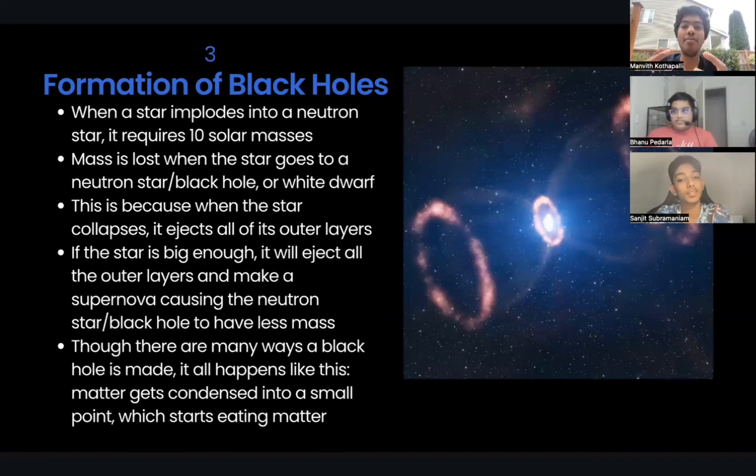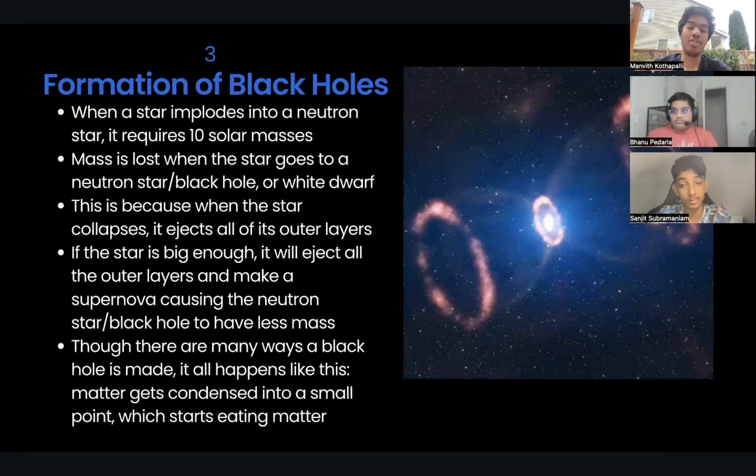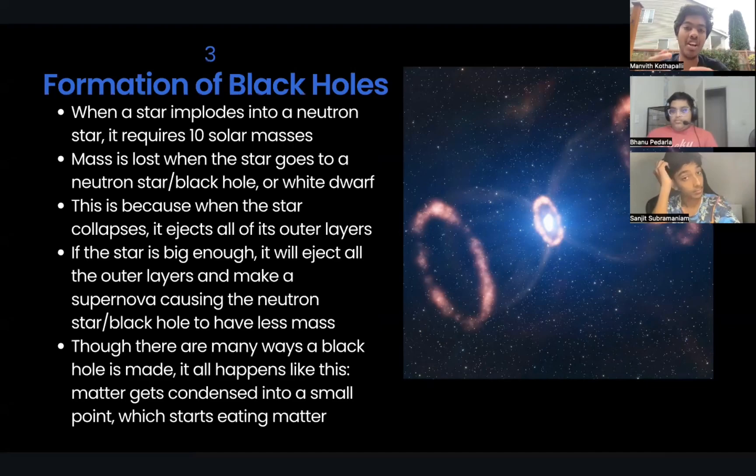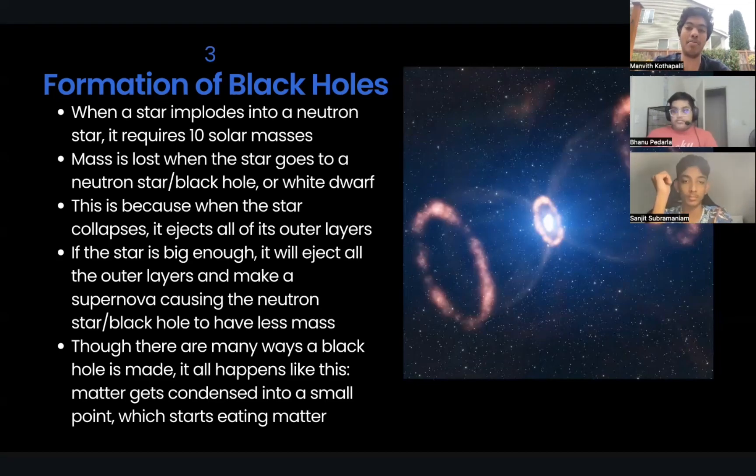Now, you might be asking how the mass is lost when the star goes to a neutron star or black hole or white dwarf. What I mean by this is that a star could be a hundred solar masses, but the black hole itself could be much, much less, like maybe like five to ten or somewhere around there. The reason why is because when the star collapses, it ejects all of its outer layers, creating a planetary nebula, causing the white dwarf to have less mass. Now, if the star is big enough, it will eject all the outer layers as well and make a supernova or hypernova if the star is really, really big, causing the neutron star or black hole to have less mass compared to the star.